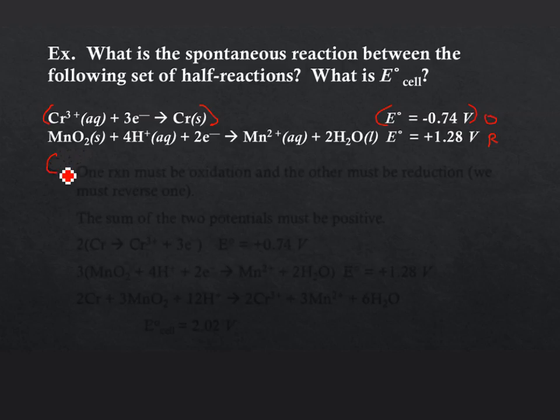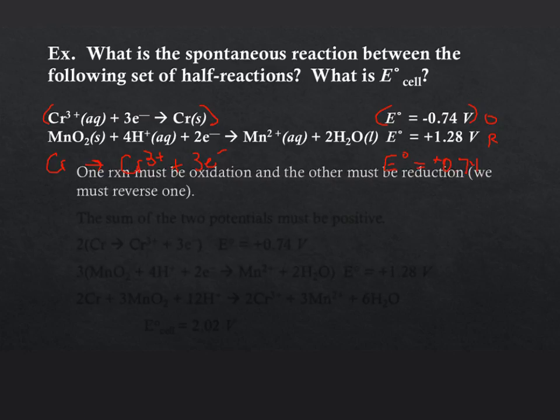So simply we could rewrite it. Chromium is solid. But again, I'm going to keep this very simple in my writing. Three electrons and then our cell potential in the oxidation half reaction would be positive 0.74.